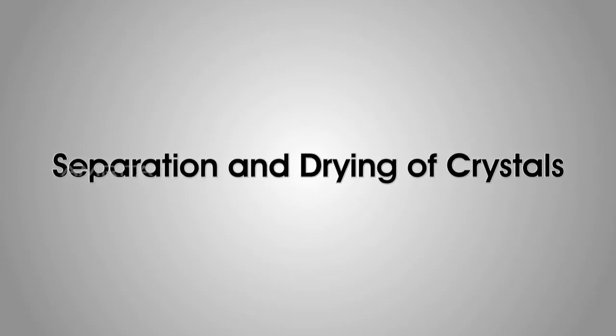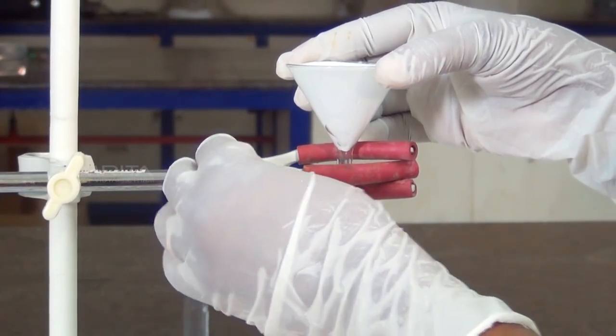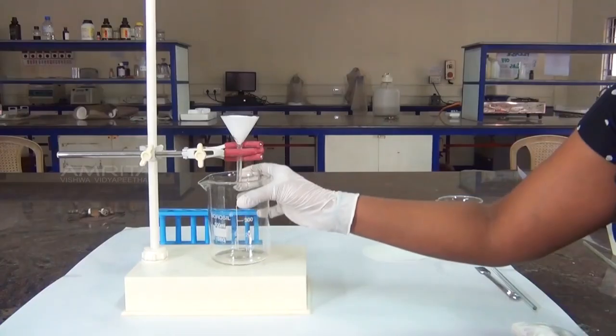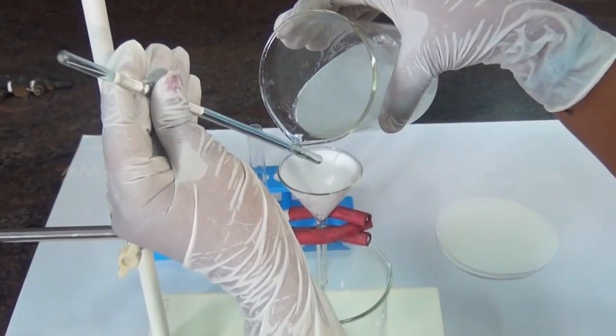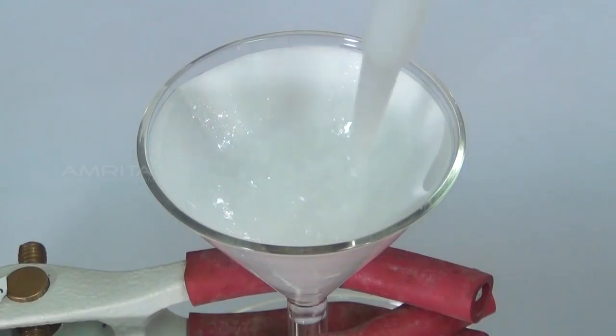Separation and Drying of Crystals: Clamp the funnel with a filter paper fixed in it to the stand. Place a beaker under the funnel and separate the crystals by filtration. Wash the crystals with cold water. Place the crystals on a filter paper which soaks up the solution.